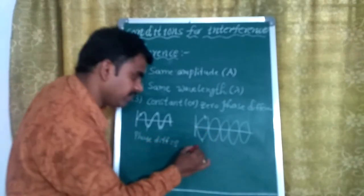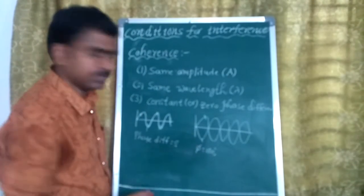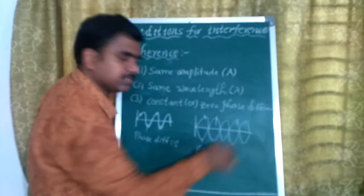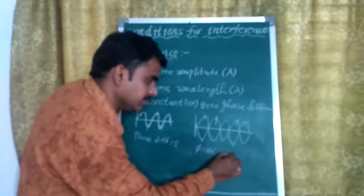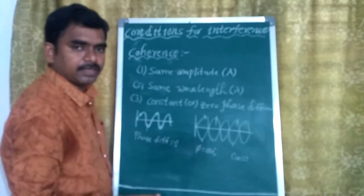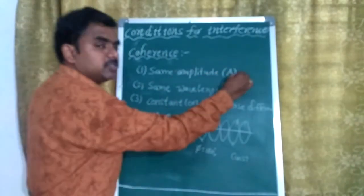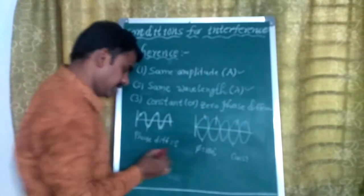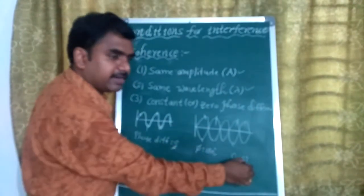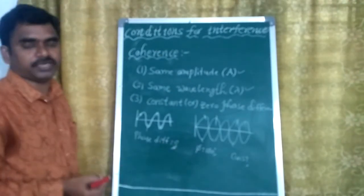That means the phase angle here is 180 degrees. If you see here, 180 degrees; here, 180 degrees; here, 180 degrees — throughout. That means the phase is constant. The waves are maintaining same amplitude, same wavelength, and the phase difference is constant — either zero or constant. Those waves are called coherent waves.